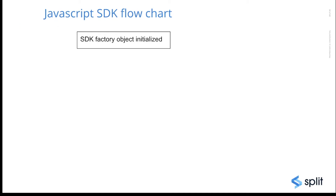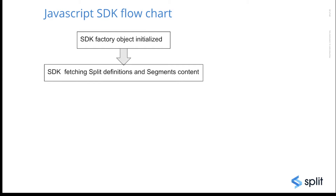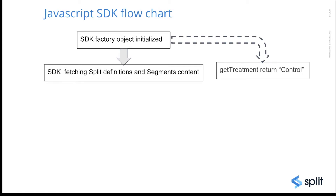Here is the flowchart. First, the SDK factory object is initialized. Second, the SDK will start fetching the split definitions and the segment content. Now if at this point we actually call getTreatment from the client object, it's going to return 'control,' which means the SDK is not ready yet to calculate the treatment.